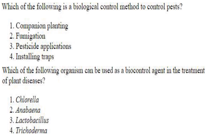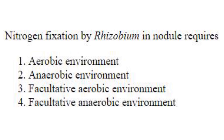Which of the following is a biological control method to control pests? Companion planting is the practice of growing different plants together to enhance growth, health, and productivity — answer is option 1. Which organism can be used as a biocontrol agent in the treatment of plant diseases? It is Trichoderma — answer is option 4. Nitrogen fixation by Rhizobium in nodules requires an anaerobic environment.